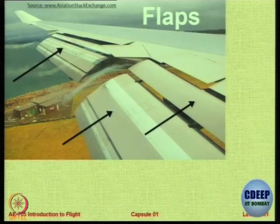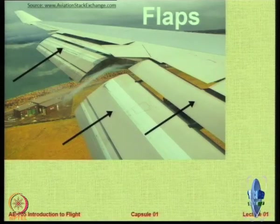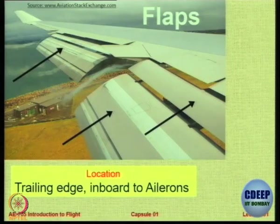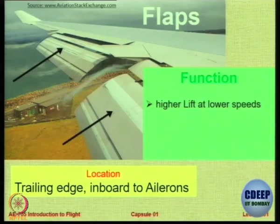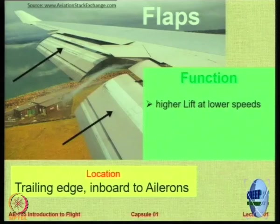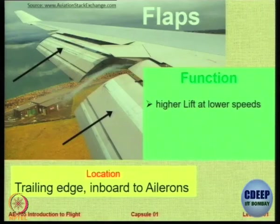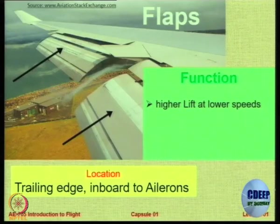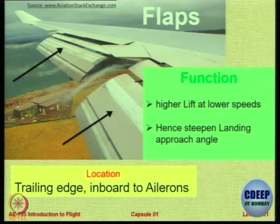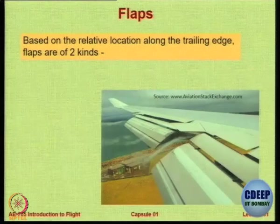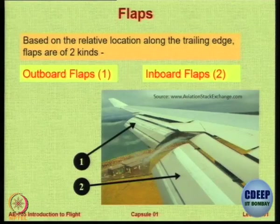Let us look at flaps. Flaps are a little bit complicated in some aircraft — as you can see, there are so many of them. The location is on the trailing edge, inboard of the ailerons. Ailerons are always more outboard than flaps. The function of trailing edge flaps is to provide higher lift at low speeds. We will study the aerodynamics behind it later. For now, understand where the flap is and what its purpose is.